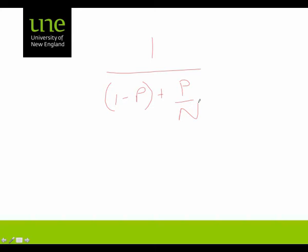P is the proportion of code, percentage of the code that can be sped up, and 1 minus P is the sequential part of the code.